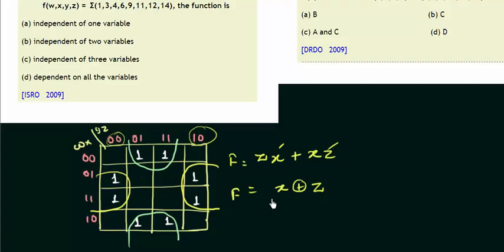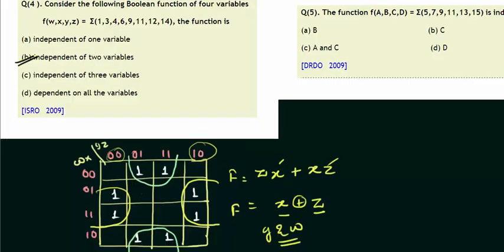The function f, so you can clearly see that the function f depends upon only two variables, that is your x and z. It is independent of y and w, so option B is correct. It is independent of two variables. A very simple problem that appeared in the EEO 2009. Now let's move to our fifth problem.